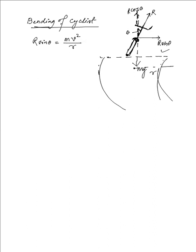R cosθ, the cosine component of the reaction force, is balanced by Mg. If this balance is not maintained, the bike may get lifted along the road and balance is lost. Taking the ratio of both equations, the M's cancel out, leaving tan θ = V²/Rg.